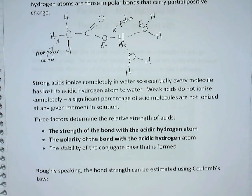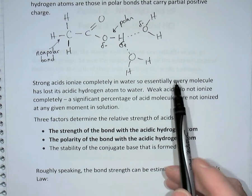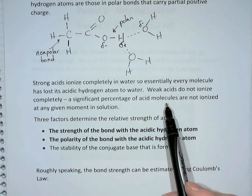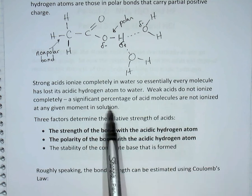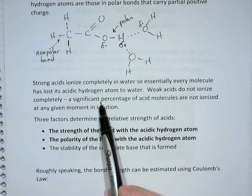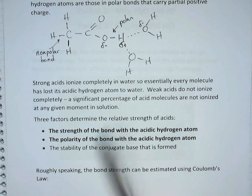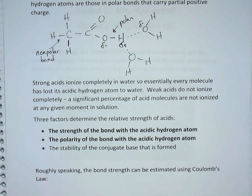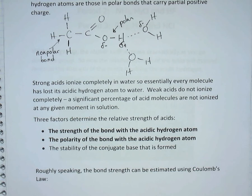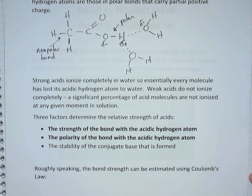A strong acid is one that ionizes completely in water — essentially every molecule of strong acid has lost its acidic hydrogen atoms to water. Weak acids do not ionize completely. Within a solution of weak acid, a very large percentage of the weak acid molecules are going to be floating around in the water, not ionized.